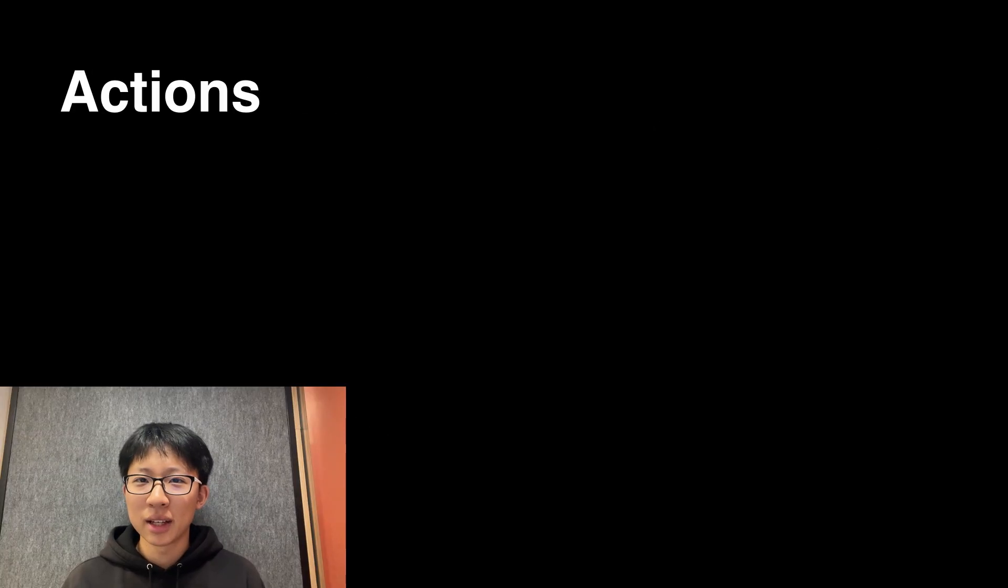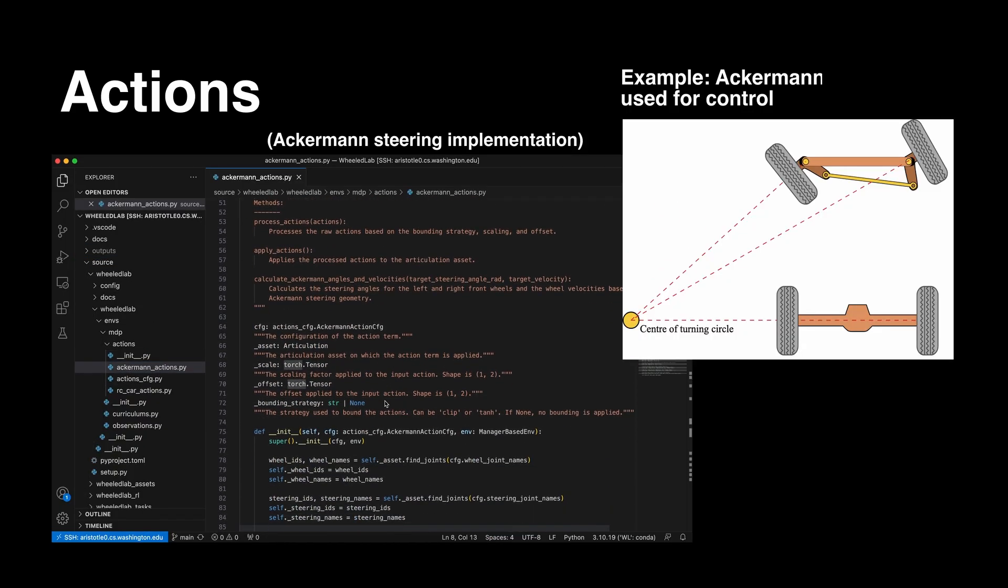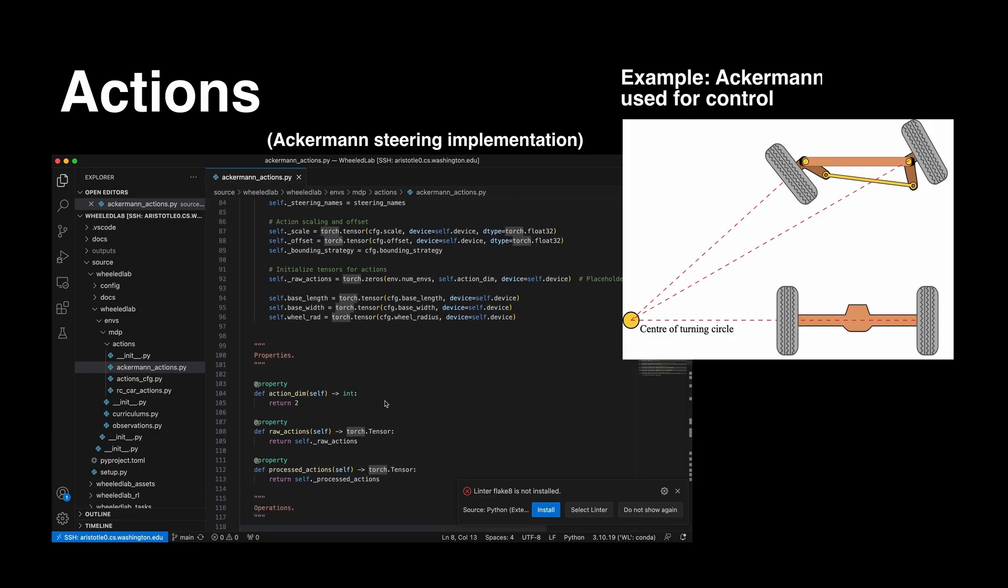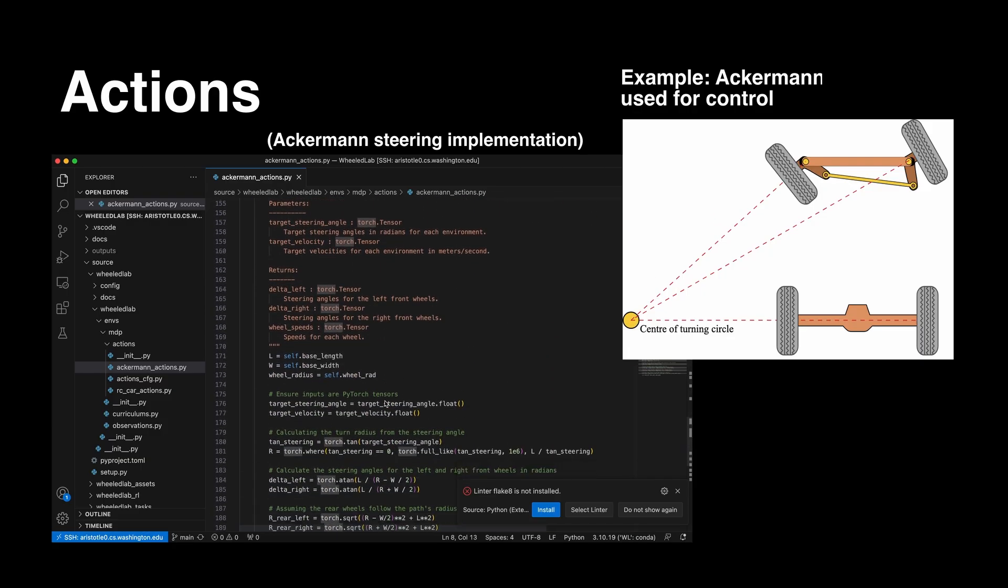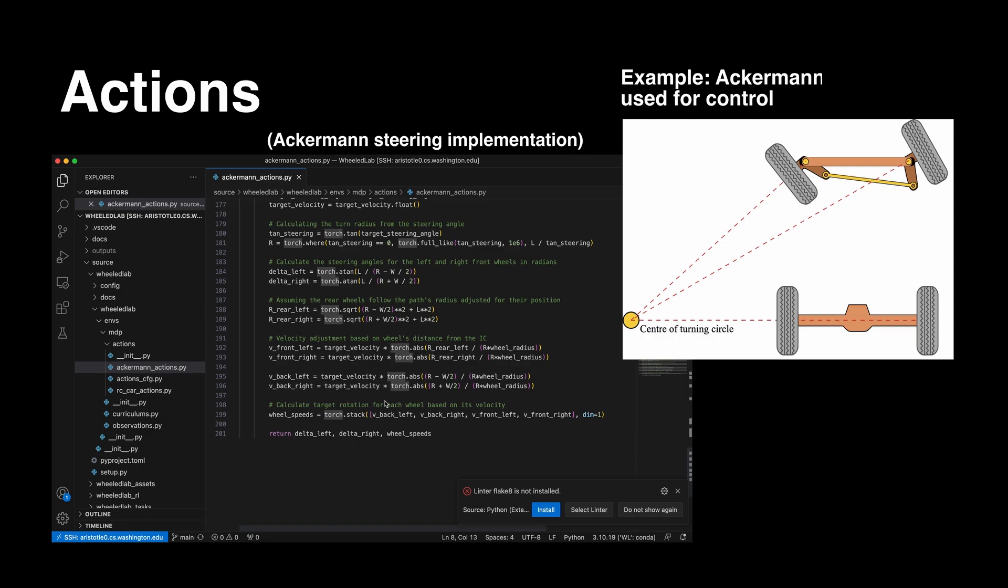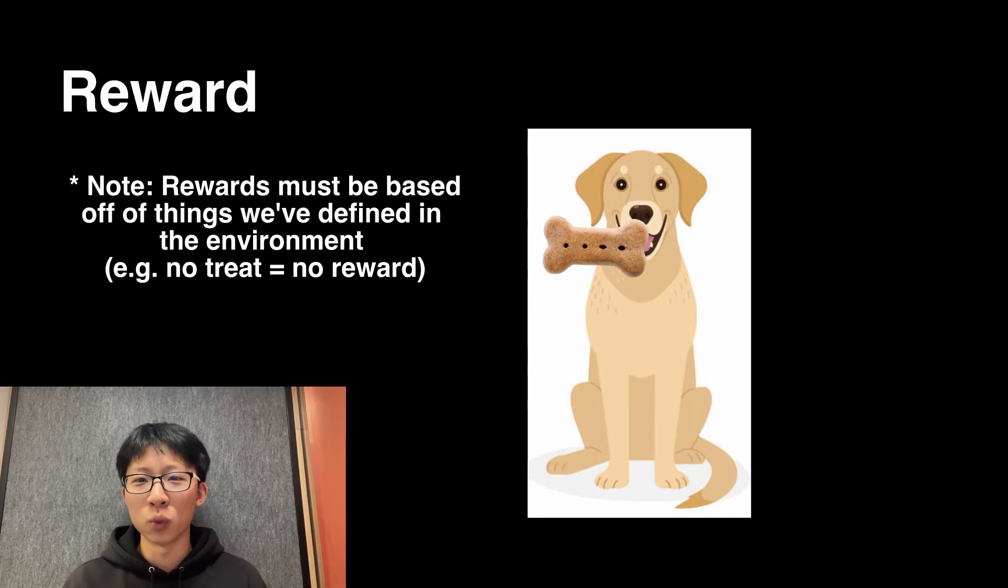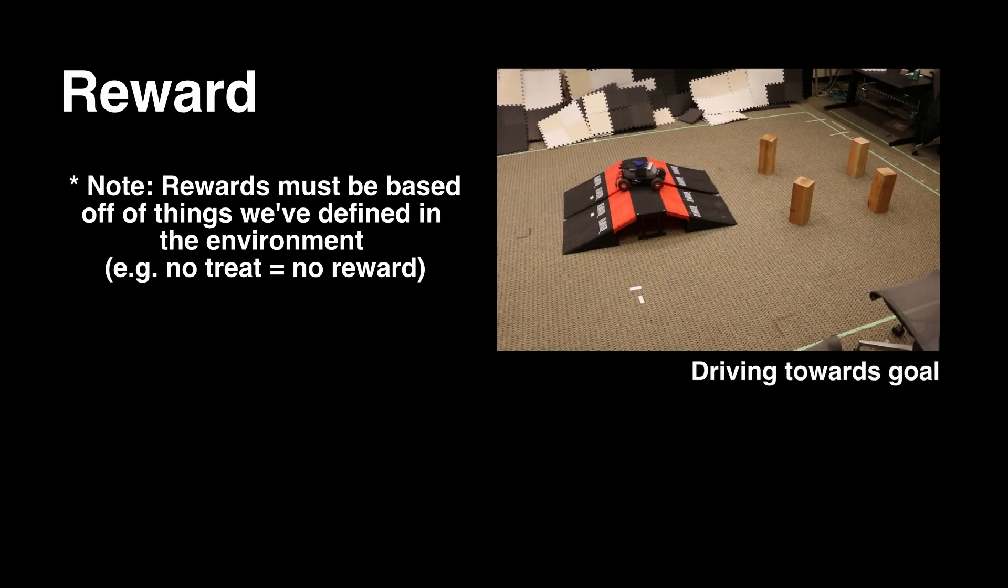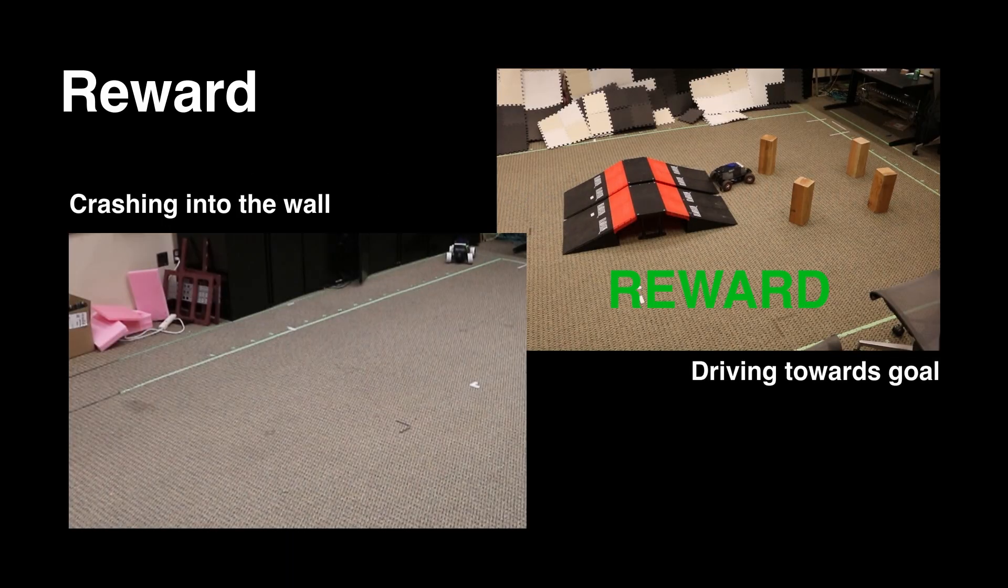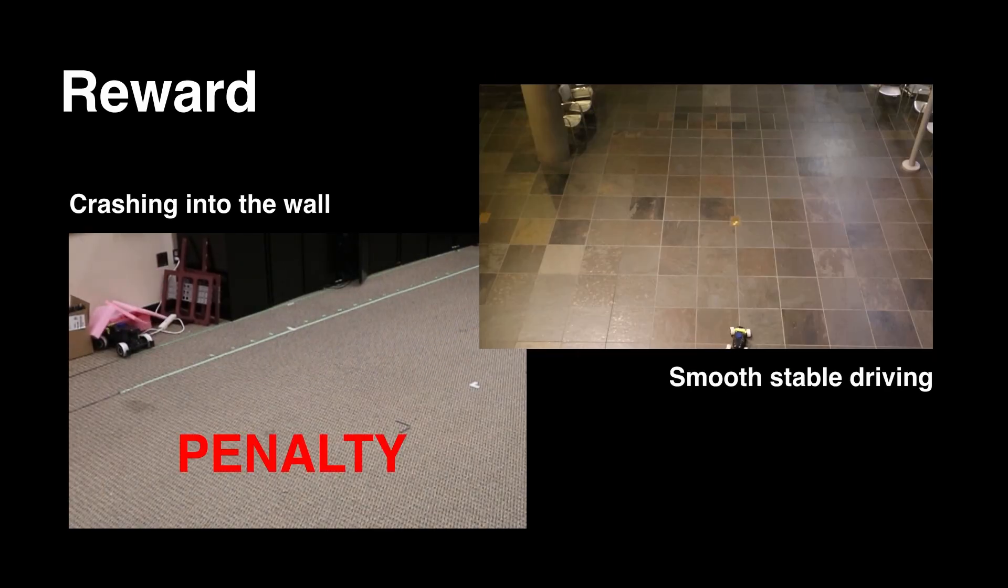Next, we've got actions. Actions are the controls the robot sends back to the simulator. These are things like steering or throttle. Basically, anything that moves the robot is considered an action. Rewards are how we tell the robot what we want. For example, moving towards a goal, that is good. Crashing into a wall, that is not good. Smooth, stable driving, that is good.